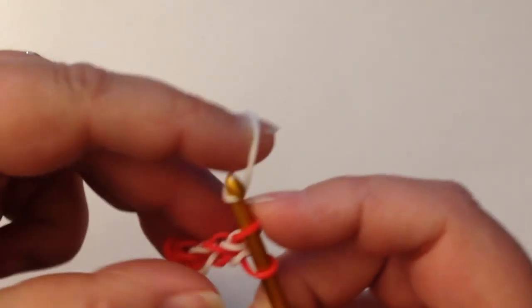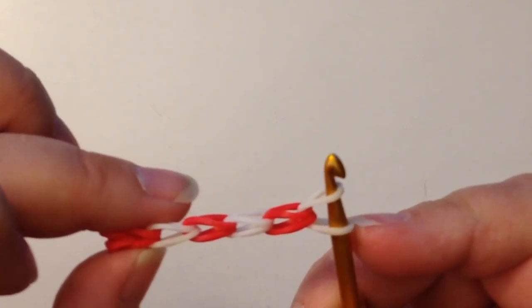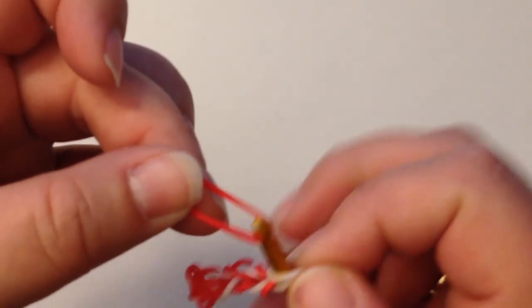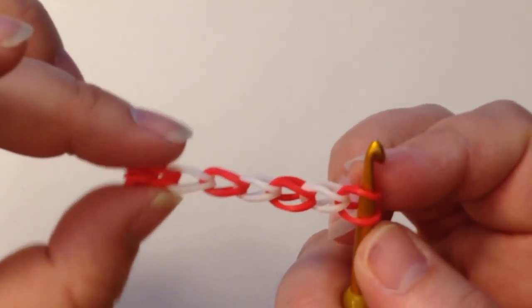So again, put it on the end of your hook and move the two loops over and reclaim. I hope you can see that clearly enough. This is how we make a chain.